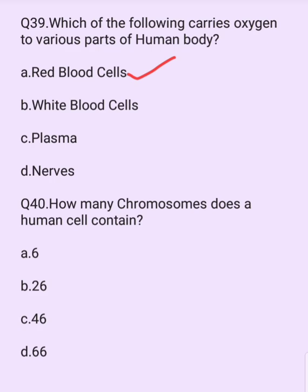How many chromosomes does a human cell contain? Options are: 6, 26, 46, 66. The answer is option C: 46.